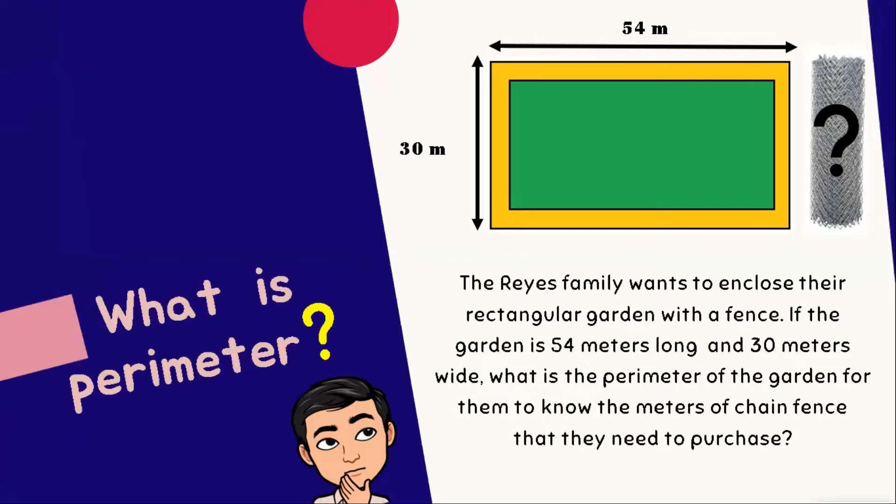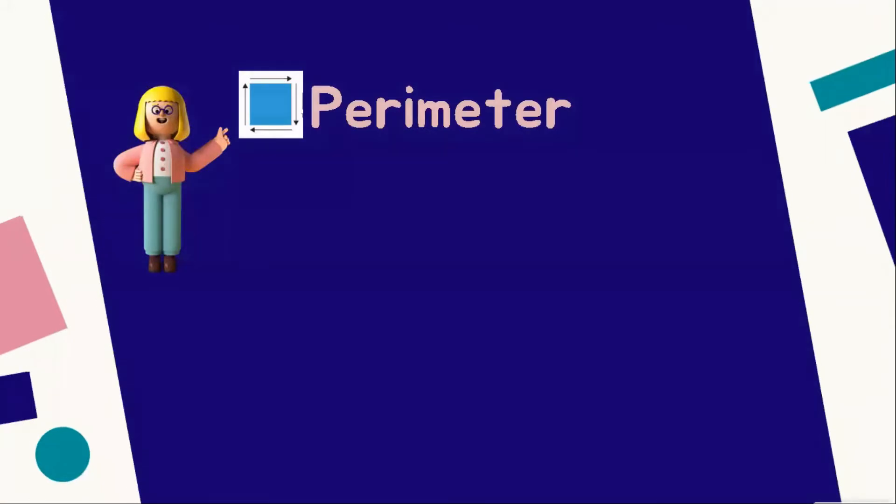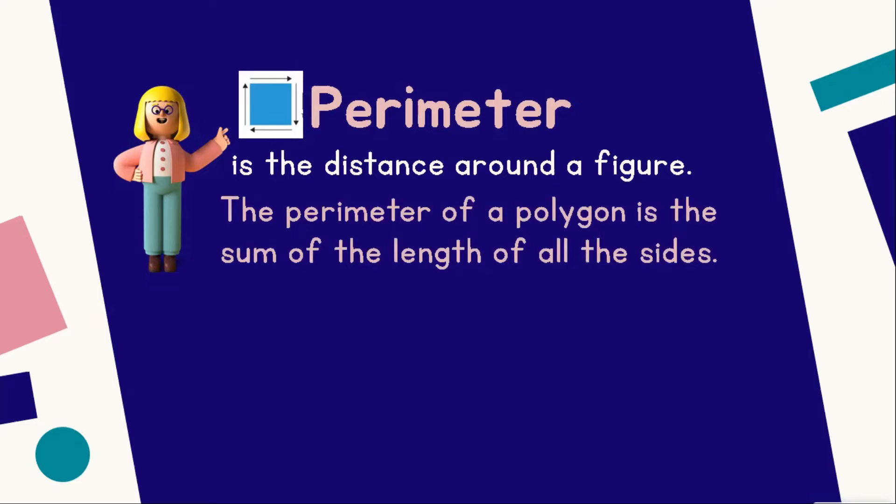In short, we will be looking for the perimeter. But before we proceed on solving the perimeter, let's define first what does it mean. When we say about Perimeter, this is the distance around a figure. And therefore, the perimeter of a polygon is the sum of the length of all the sides.